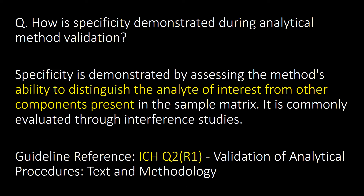How is specificity demonstrated during analytical method validation? Specificity is demonstrated by assessing the method's ability to distinguish the analyte of interest from other components present in the sample matrix. It is commonly evaluated through interference studies. Guideline reference: ICH Q2.